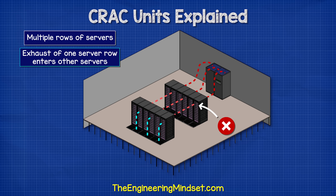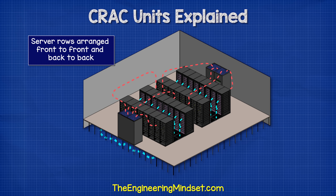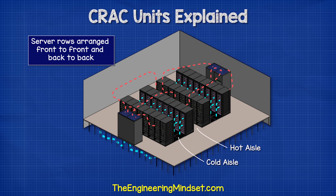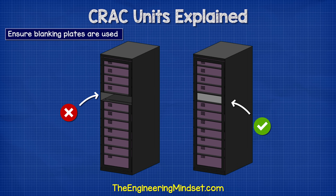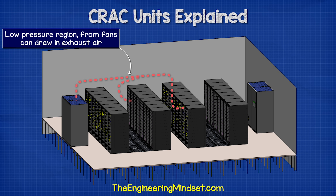Instead, we arrange the rows front-to-front and back-to-back. This way, cold air is only provided to the front of the servers and the hot exhaust is not sucked into another server, creating hot and cold aisles. We also need to ensure that empty spaces in server racks are filled with blanking plates to prevent warm exhaust air from recirculating. Additionally, the fans in the server racks create a negative pressure region at the front of the server, which can draw warm exhaust air down and recirculate it back into the server.